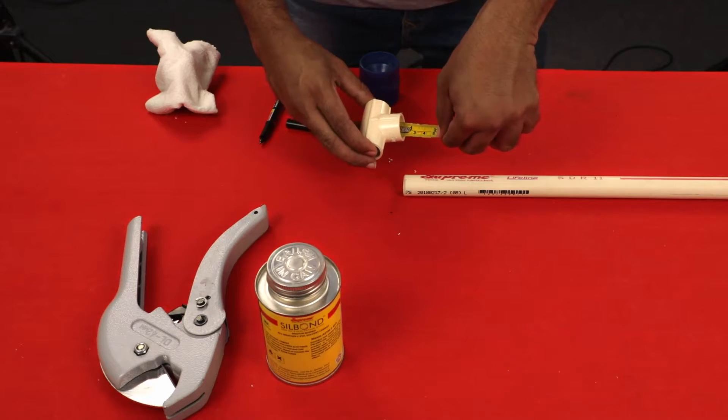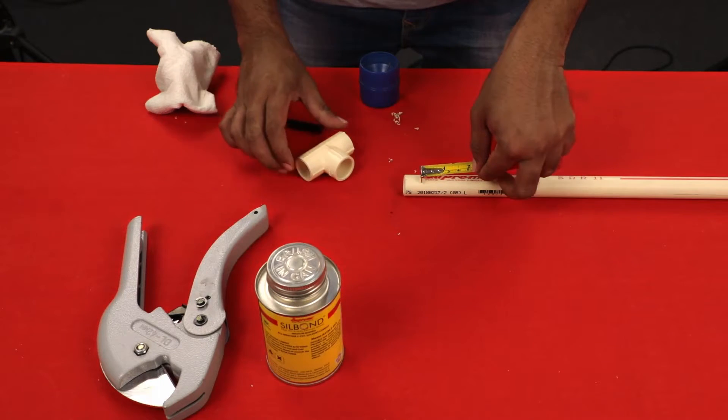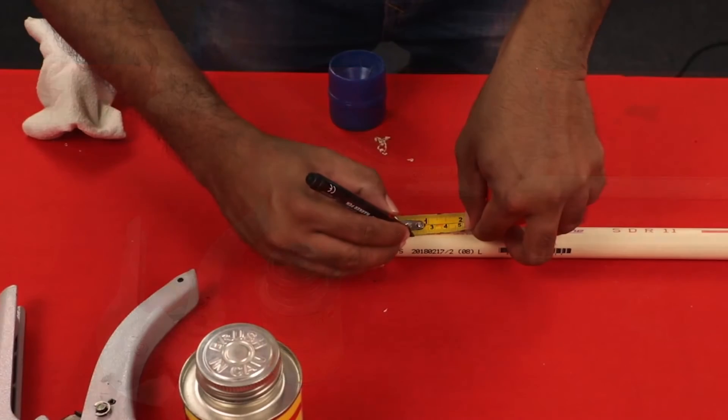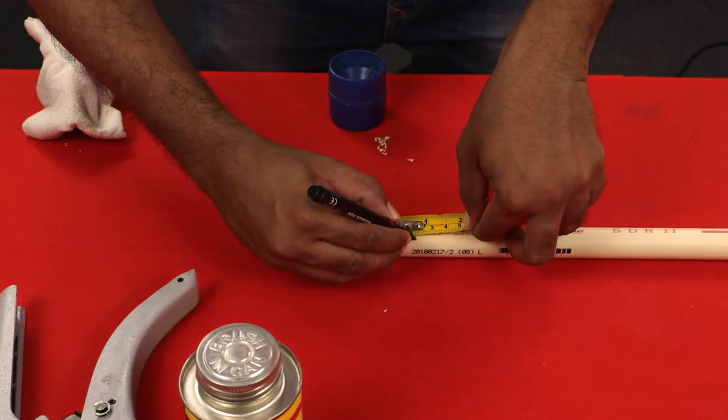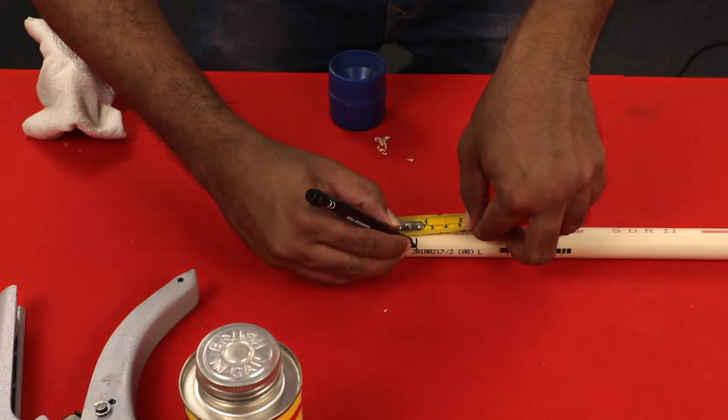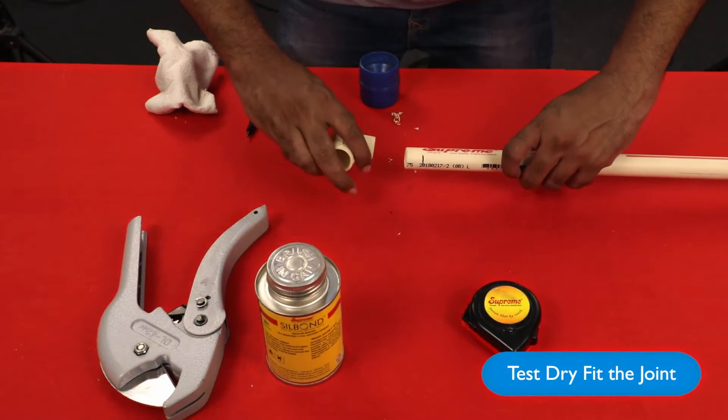Marking: Mark the required insertion depth of socket on the pipe which will show the full depth of penetration inside the fitting socket. Test dry fit the joint.